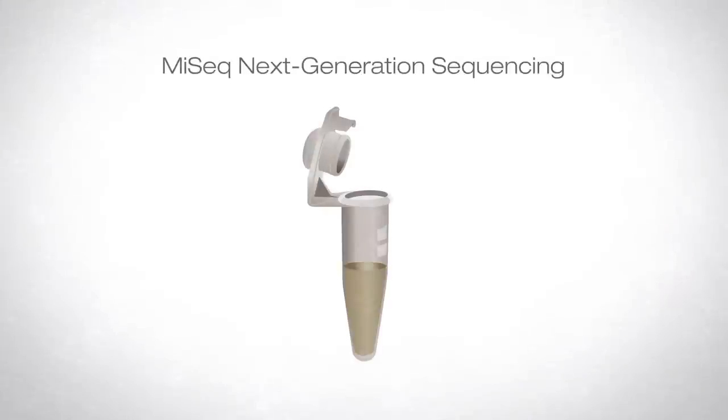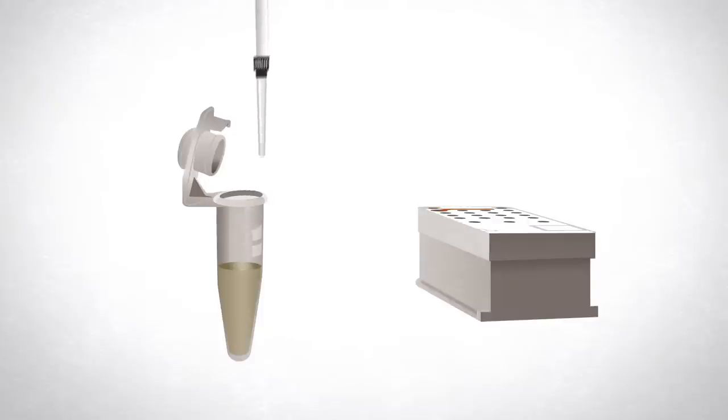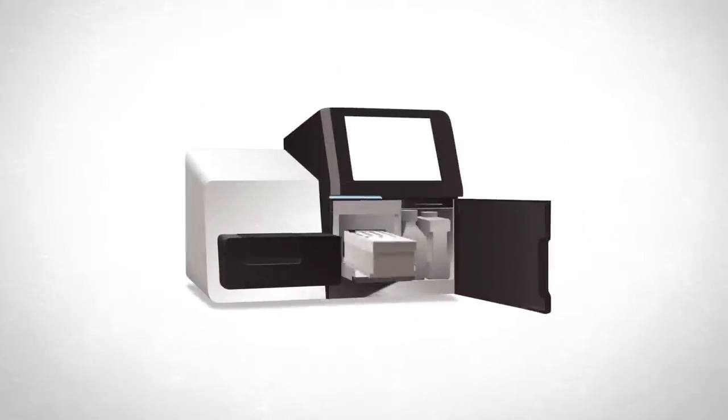With next generation sequencing, many microbial organisms from a complex sample, such as the gut, can be identified simultaneously using the 16S method, without the need for colony isolation or culture.